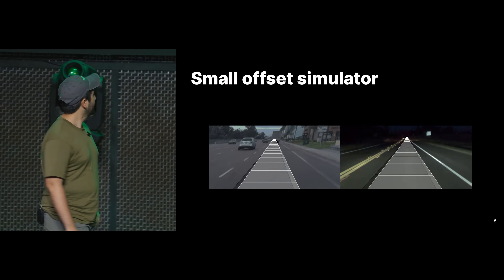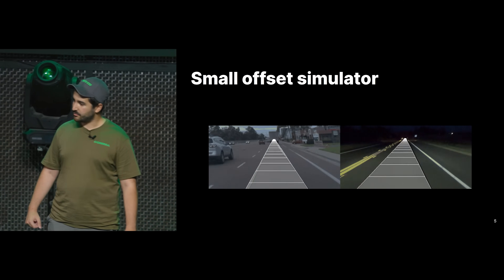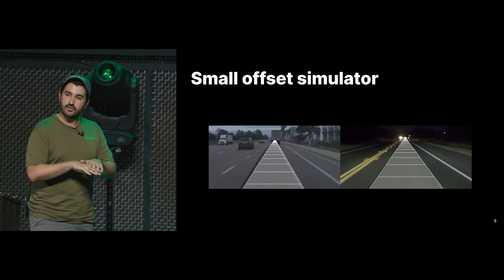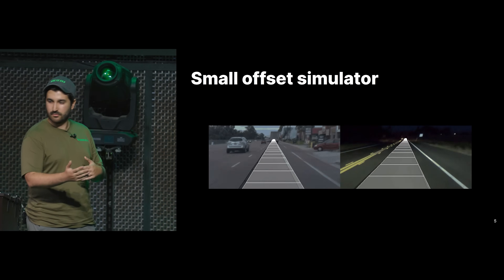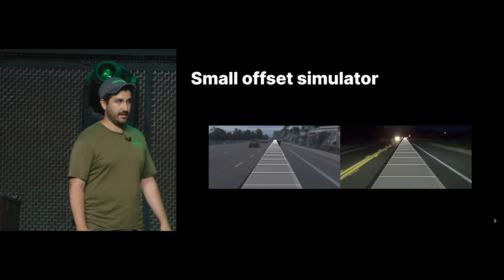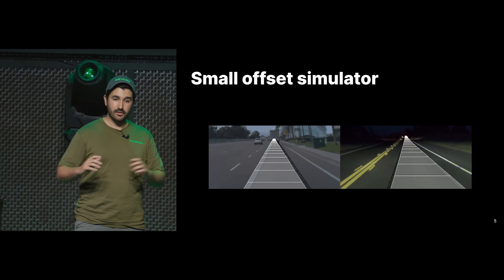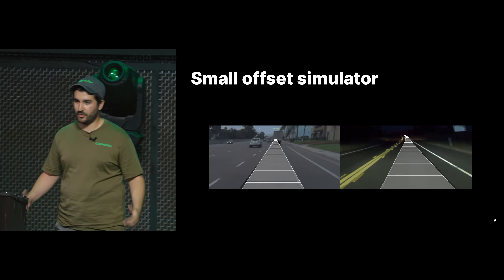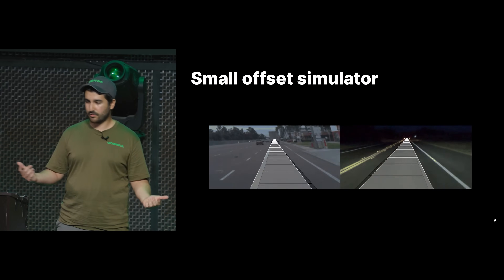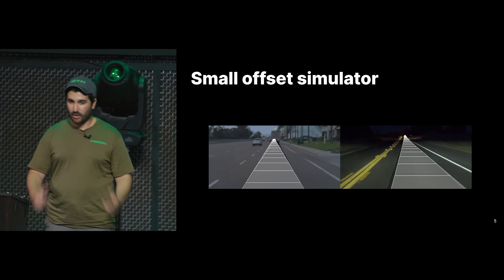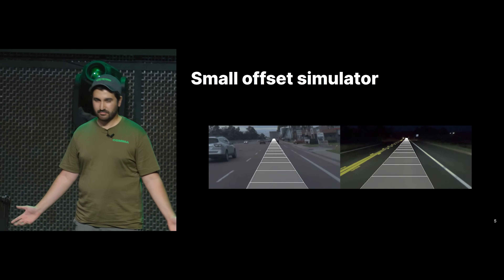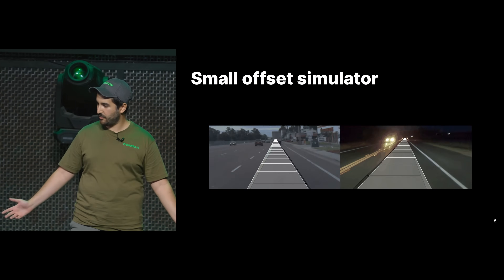We came up with a thing called the Small Offset Simulator. It's basically a simulator in which we shift the image a little to the right, a little to the left, a little forward, a little backward, to simulate small movements from the original position. When we train the model in this simulator in closed loop, we actually see driving — a model that recovers, stops for stop signs, stops for red lights. This is the Small Offset Simulator, and that's what we've been running with for a few years.